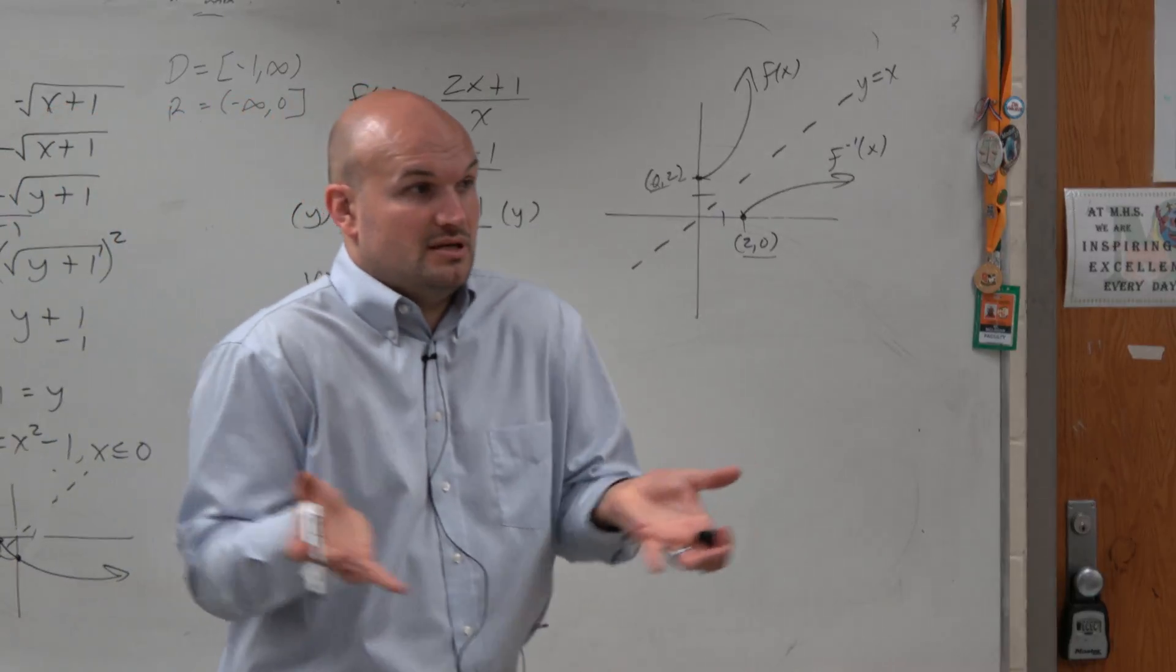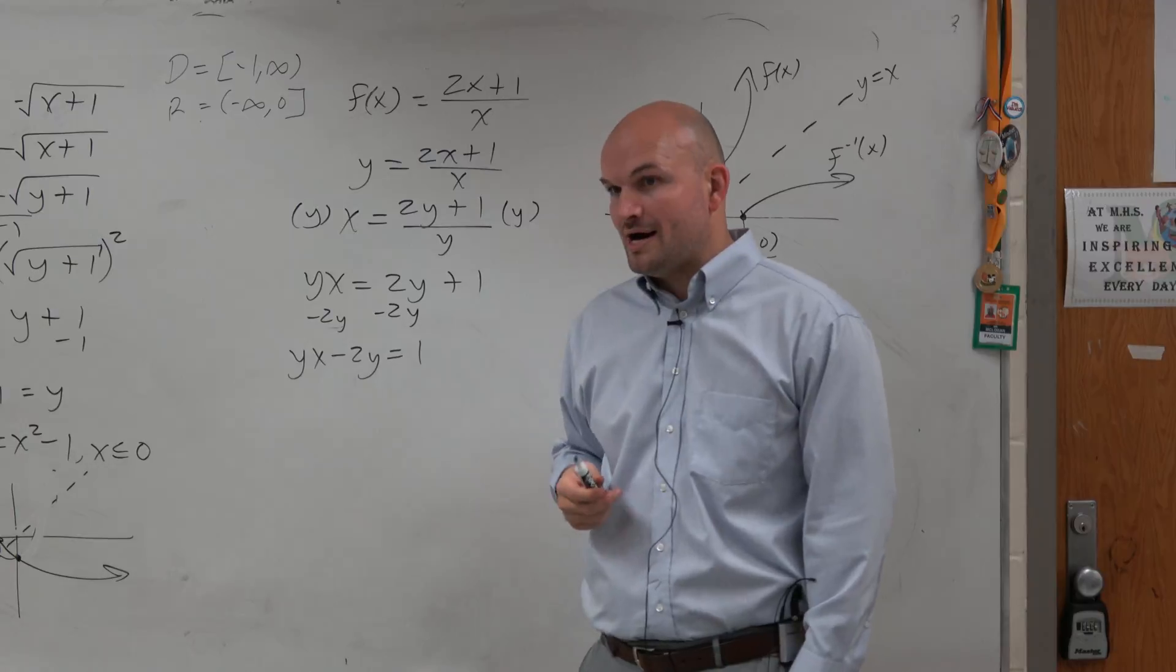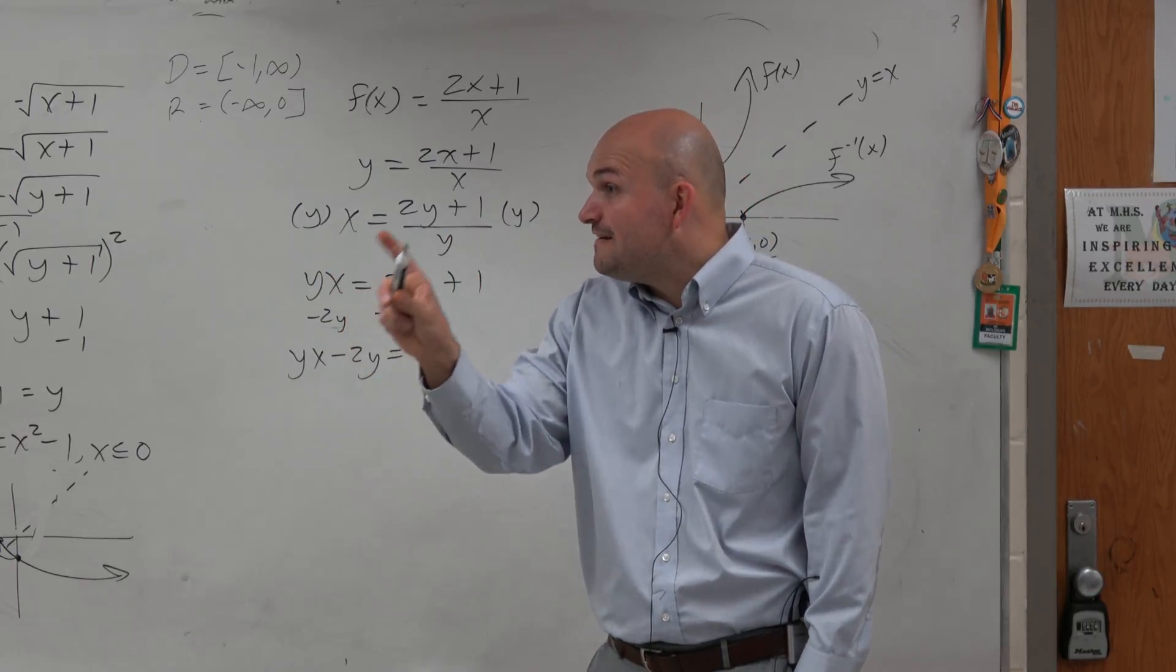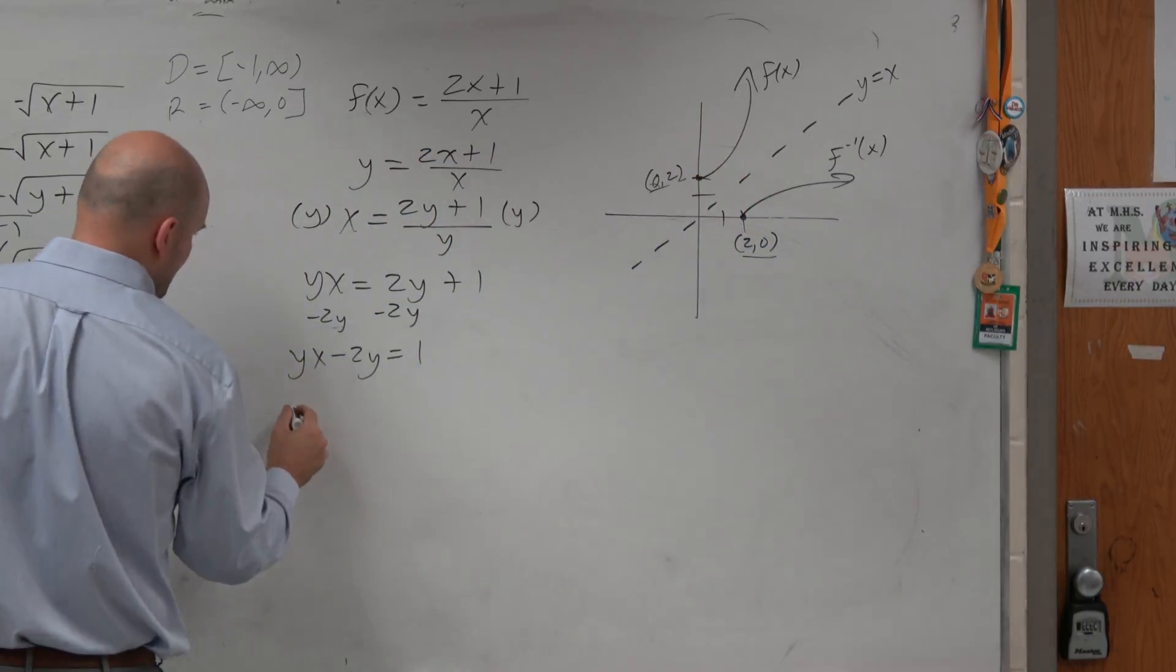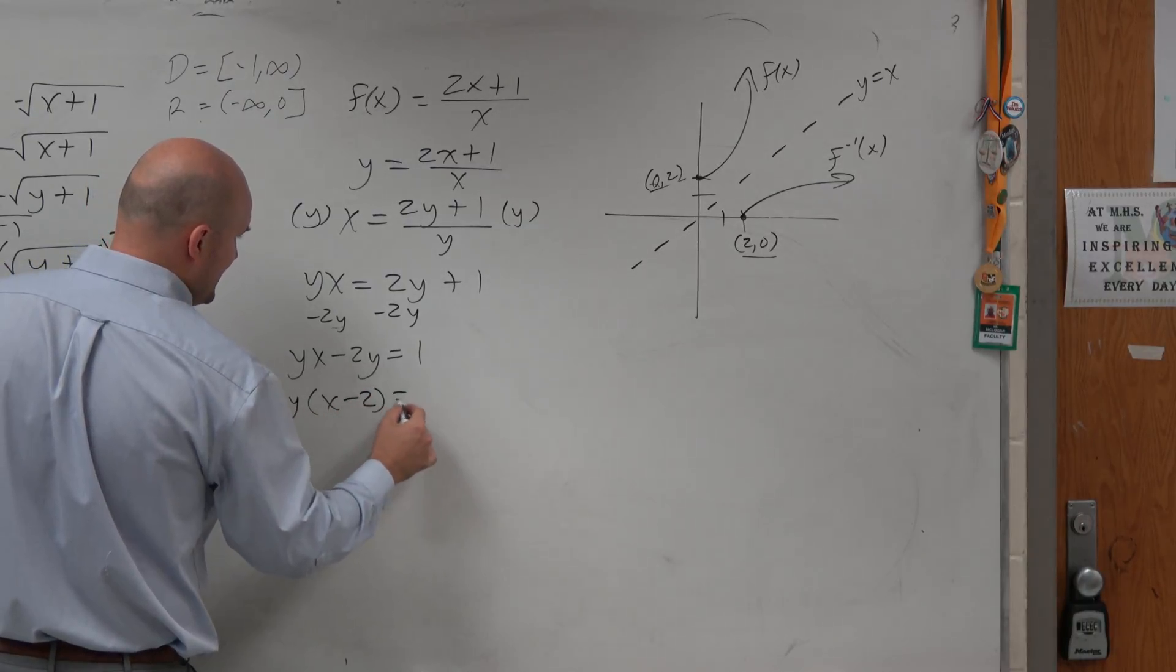Now, what do you do? You're supposed to combine like terms, but we can't combine like terms. That's yx and that's 2y, right? But you can factor. And if you factor out a y, you're left with x minus 2 equals 1.